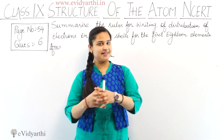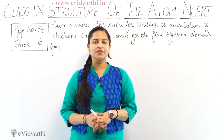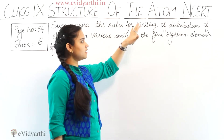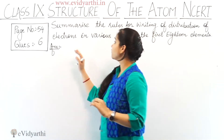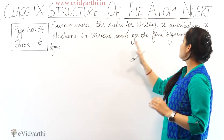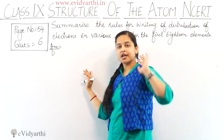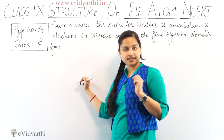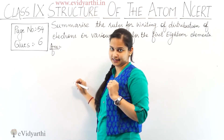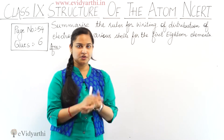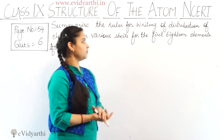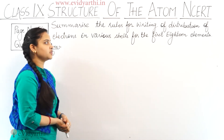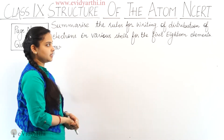Hi kids, it's me Raki from Egudhyarthi.in. In this session, I'll tell you the rules for writing the distribution of electrons in various shells for the first 18 elements. This question is on page number 54, question number 6, Chapter 4 Structure of Atom, Class 9. Let's see what is the solution for this question — rules for writing distribution of electrons in various shells for the first 18 elements.